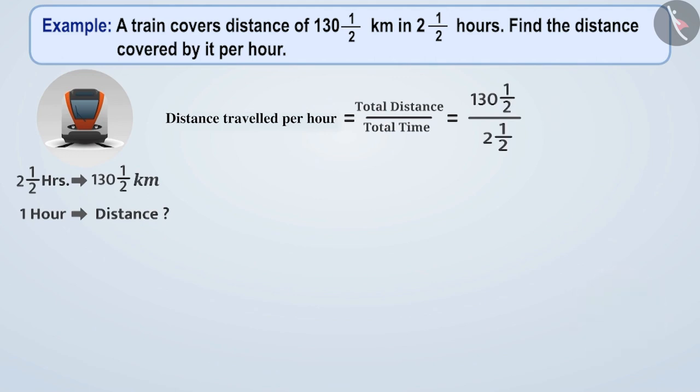Absolutely right. We must first write these rational numbers in the form of proper fractions. 130.5 can be written as a fraction 261 by 2. Similarly, 2.5 can be written as a fraction 5 by 2.